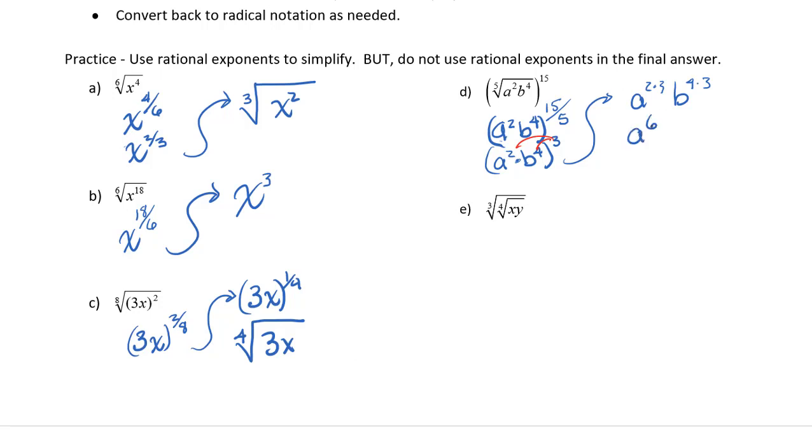This gives me a to the sixth, b to the twelfth. Since my denominator has divided out, once again, I don't have to rewrite it as a radical.